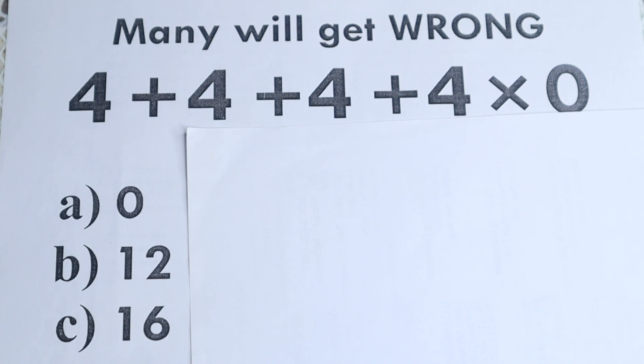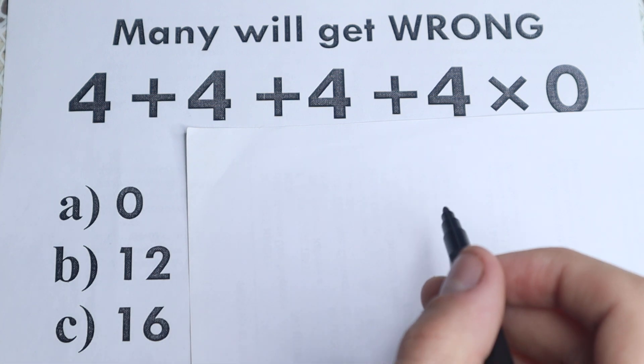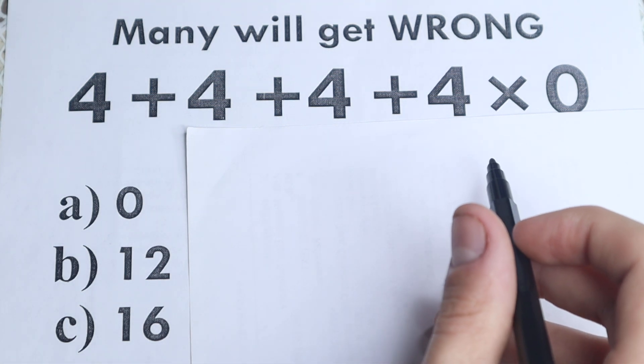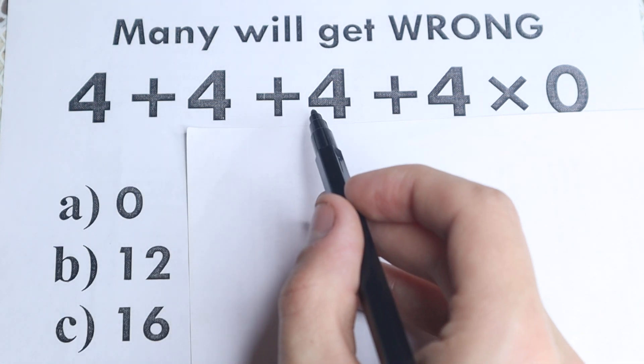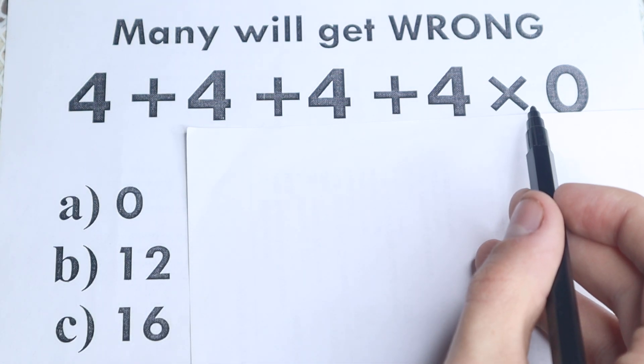Okay, in this video we are going to do a very simple math problem and you're going to be surprised that many of you are actually going to get this wrong. So I don't want you to use your calculator right here because here is a problem. We have 4 plus 4 plus 4 plus 4 times 0 in the end.